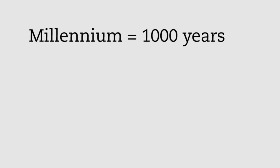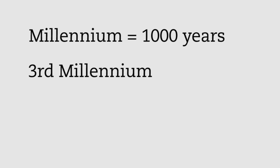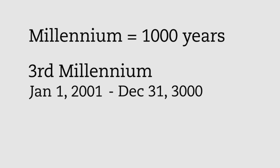The same thing applies to millennia. A millennium equals a thousand years. Currently, we're living in the third millennium CE, which started on January 1st, 2001, and will continue until December 31st, 3000. So do you remember December 31st, 1999, when everyone was freaking out and reporters were saying it's the end of the millennium? Well, they were wrong — because they were a year early.